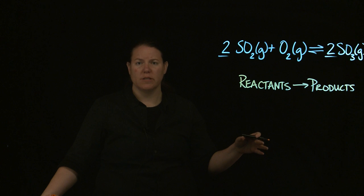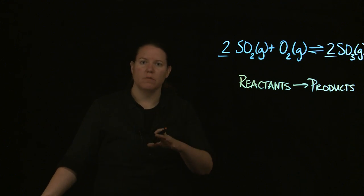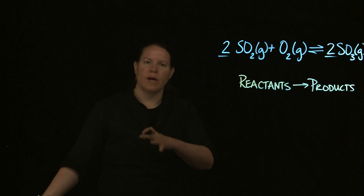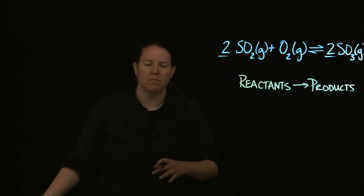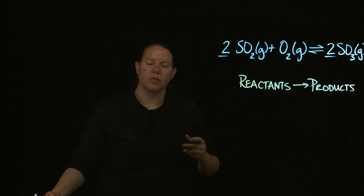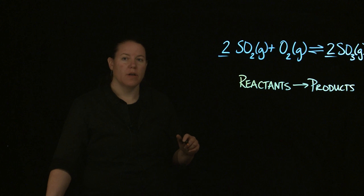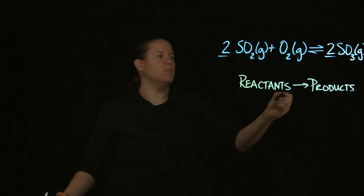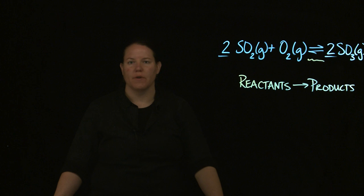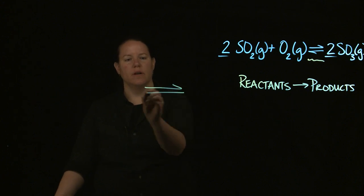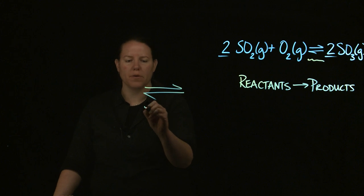Most chemical reactions definitely have some amount of reactants going to products, but then you also have some reverse reaction — that's what we call it — where the products go to the reactants. And you get what we call a double-headed arrow, which is what we're showing here. This lovely entity is an equilibrium arrow.